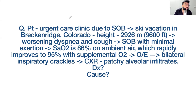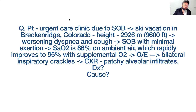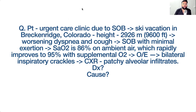A patient on a ski vacation in Colorado — which is at high altitude — presents with worsening dyspnea and cough, shortness of breath with minimal exertion. Oxygen saturation is 86% on ambient air but rapidly improves to 95% with supplemental oxygen. At high altitude, if you give supplemental oxygen, why does saturation rapidly improve?